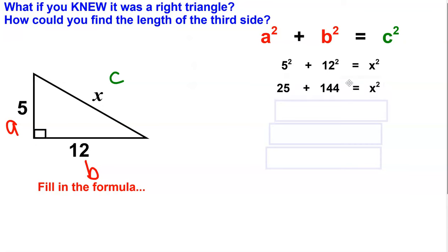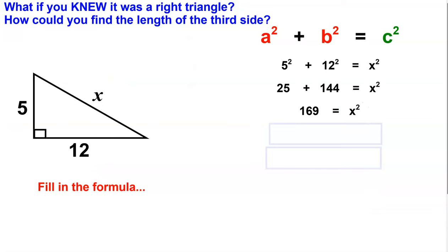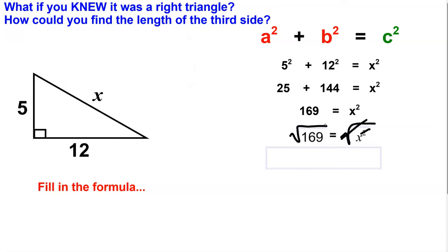Compute the squares and simplify the left-hand side. Now it's time to figure out what just the letter X is — not X squared. In order to do that, we need to square root each side of the equation, because a square root is the inverse of a square. If you square root the left, you have to square root the right.